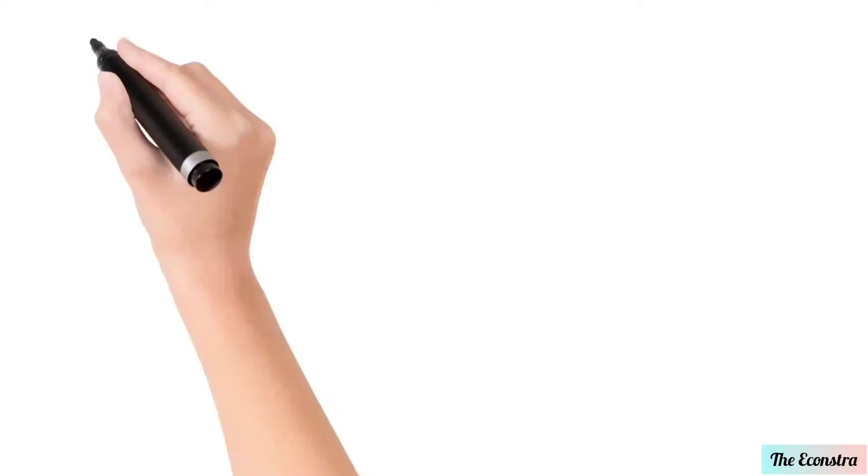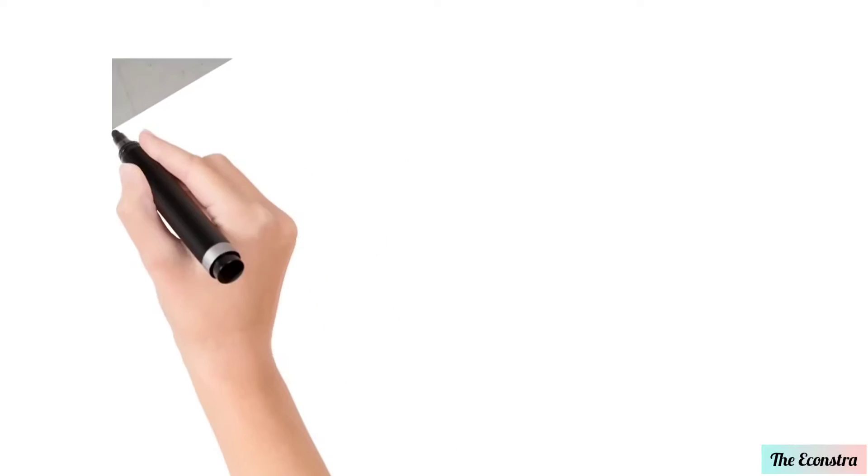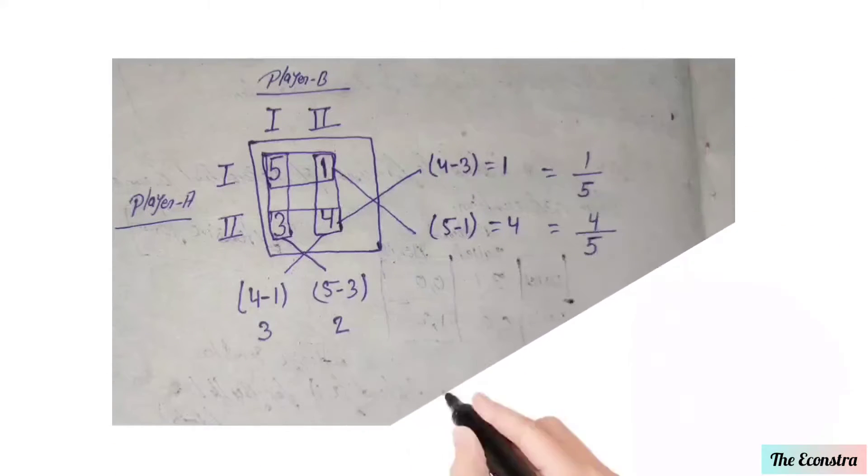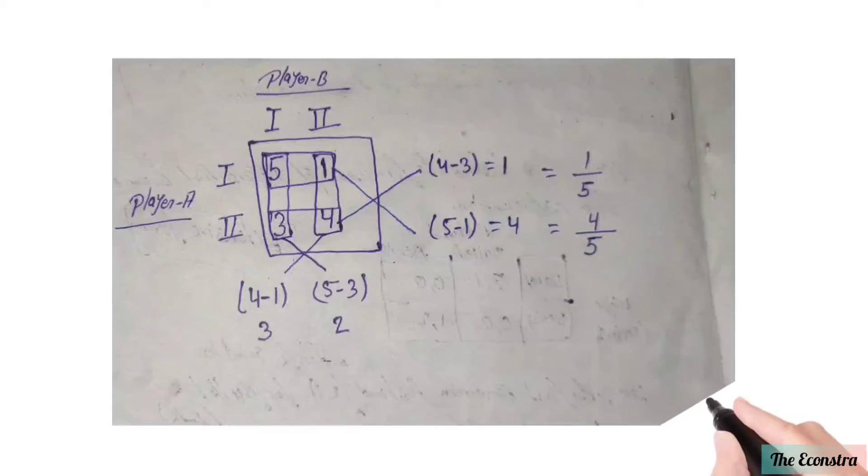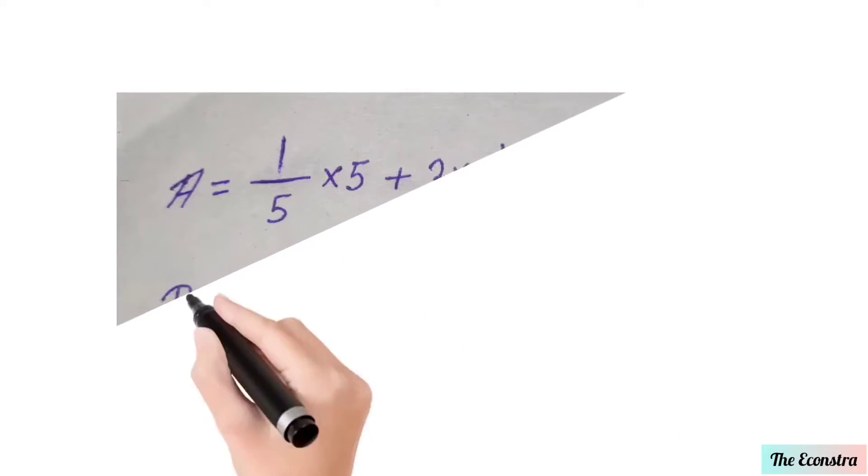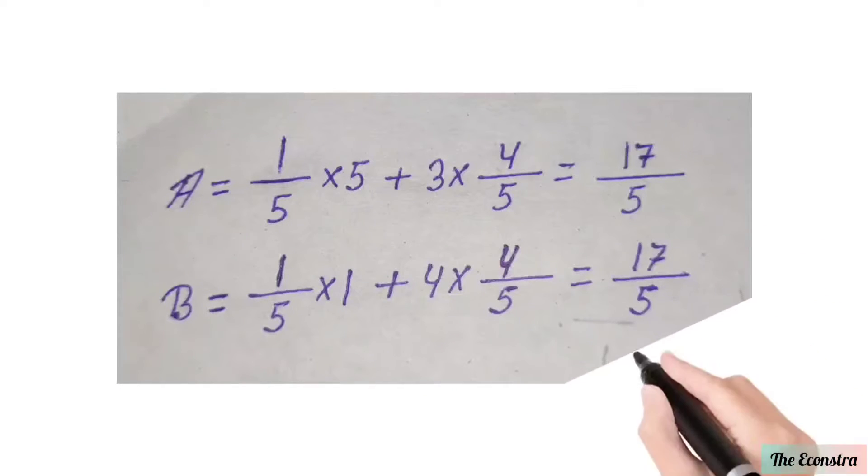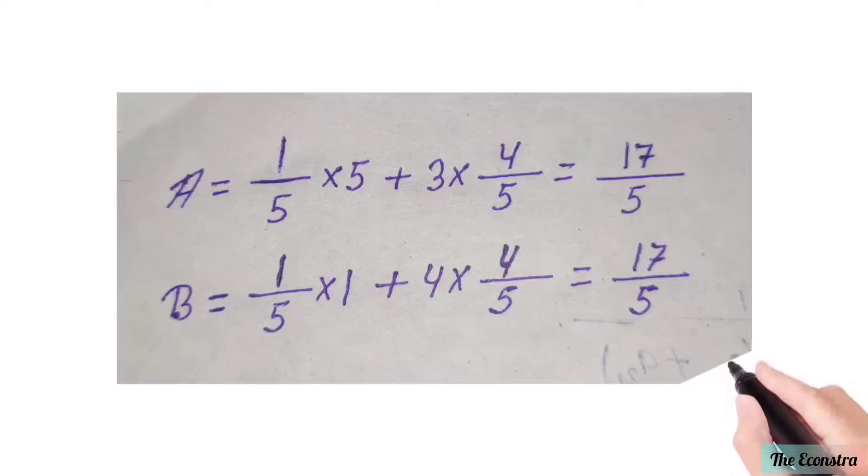The calculations are calculated like this. Here the combination is 3/5, 2/5 of player A. Player B is 1/5 and 4/5. Here the calculation is player A gets 17/5 and player B is the same, 17/5. Both are same.